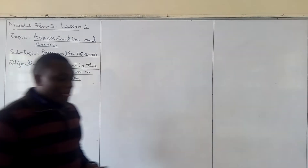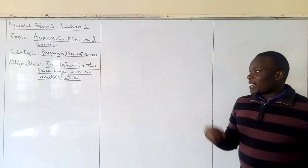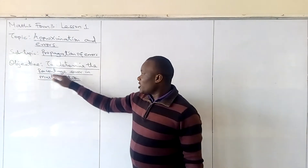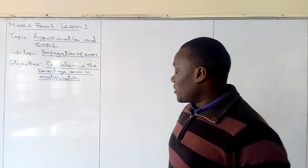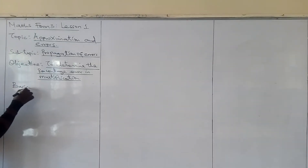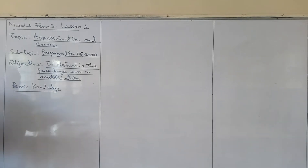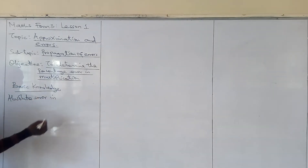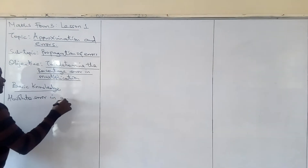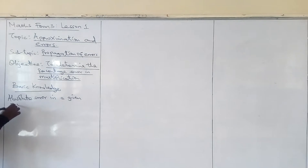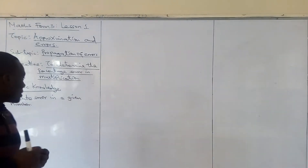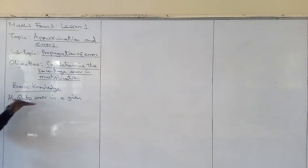I will start by letting you know the things to understand before we embark on determining the percentage error in multiplication. The first thing we need to understand is how to obtain the absolute error in a given number. This is very, very important. I will give you various examples.